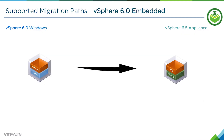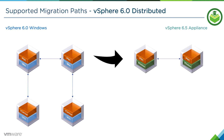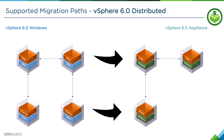Looking at vSphere 6.0, it's a little more simple. On the left, we've got vCenter 6.0 all embedded — everything on one machine — and it's a simple single VM migration to a vCenter Server Appliance 6.5. In a distributed setup in vSphere 6.0, we would have our PSE machines and our vCenter machines. We would migrate the PSE machines first to become our appliances on 6.5, and then migrate the vCenters to become vCSA 6.5. Migrate the SSO or PSE layer first, then migrate the vCenter Server layer.